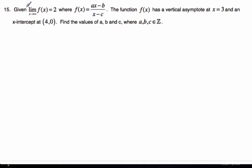Well, this notation here means the limit as x goes to infinity of f(x) is 2. That's another way of saying that the horizontal asymptote is y equals 2. We also know the vertical asymptote is 3, and the x intercept is (4, 0).